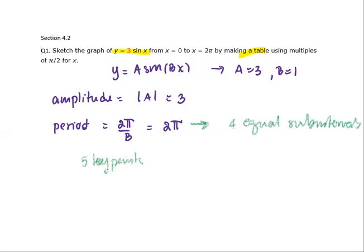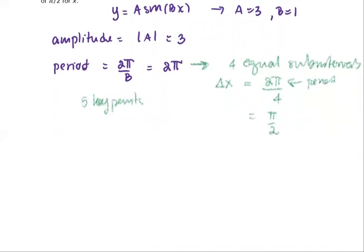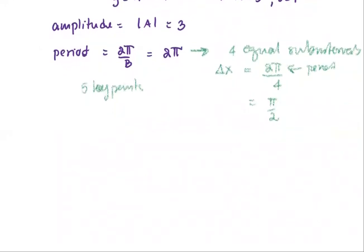And the delta x, which is the increment, will be the period divided by 4. The value 2π is the period, so the increment will be π/2. That's the reason the table provided on the homework is by π/2.